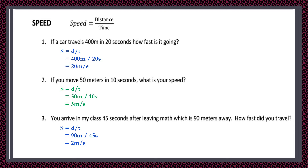Third question: you arrive in physics class 45 seconds after leaving maths class, which is 90 meters away. How fast did you travel? Applying S equals d over T, with distance 90 meters and time 45 seconds, you get the answer: 2 meters per second.